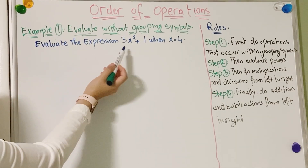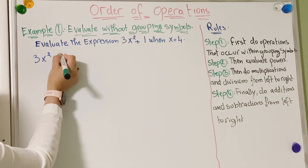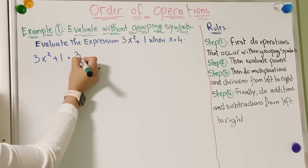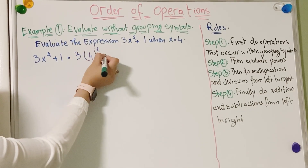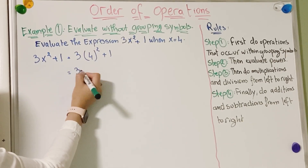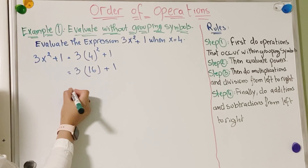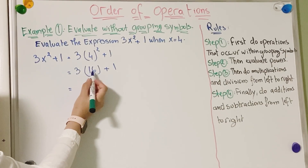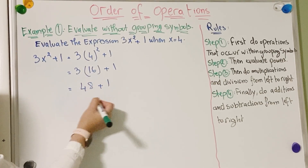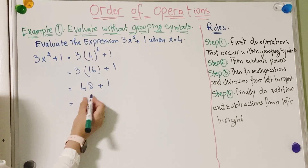In the first example, we're going to evaluate the expression 3x² + 1 when x equals 4. We replace x with 4, giving us 3 × 4² + 1. Next, we evaluate the power: 4² = 16, so we have 3 × 16 + 1. Then we multiply: 3 × 16 = 48, and finally 48 + 1 = 49.